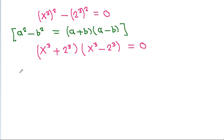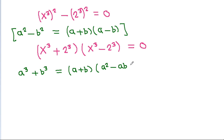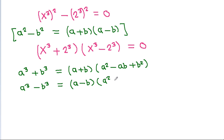We use the identities: a³ + b³ = (a + b)(a² − ab + b²), and a³ − b³ = (a − b)(a² + ab + b²).